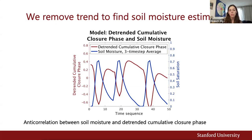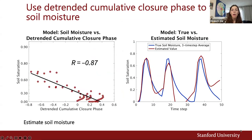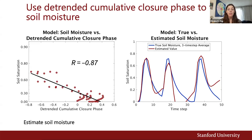Now let's see if we can use this relationship to estimate soil moisture. We scatter the detrended cumulative closure phase against the soil moisture and find a correlation coefficient of negative 0.87. We find a consistent regression line and use this regression to generate an estimate for soil moisture. The estimate appears to track the soil moisture fairly closely. Now let's see how well this concept works in some real data.